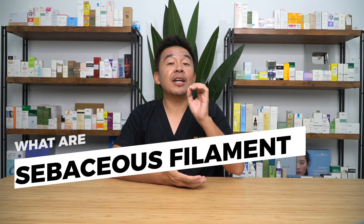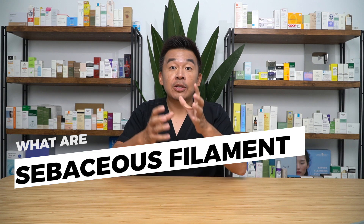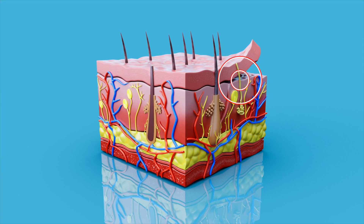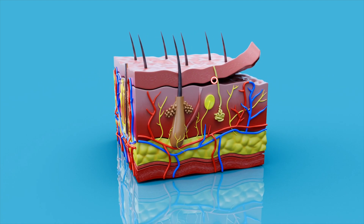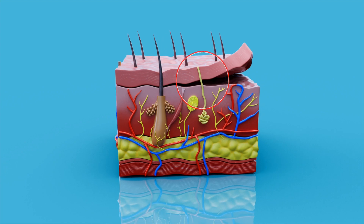Sebaceous filaments are actually naturally occurring structures in your skin. They are very fine tube-like structures which extend from your pores. It's been long postulated that sebaceous filaments have no function at all, but lately they discovered that they actually have a very important function. Due to their tube-like structure, they act like a pipe.